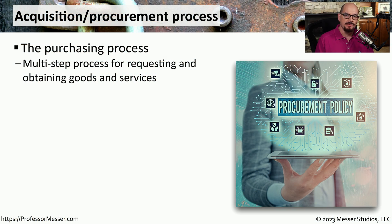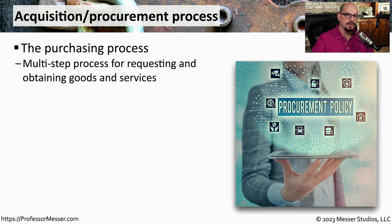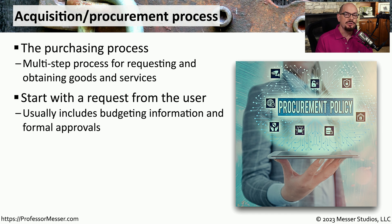Every organization has a formal process for acquiring goods and services from third parties. This is part of the purchasing process, and it's often a very formal process which requires sign-off and approval by a number of different parts of your organization. This process usually starts with the end user, who may have a particular software or hardware requirement, and they'll work with the information technology group and the purchasing department to obtain those goods or services.